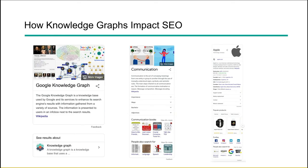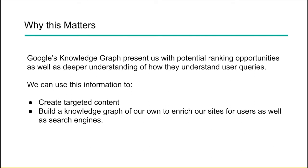We can actually use these knowledge graph examples and panels within search to understand quite a bit about what's going on within the query of the user and all the data that's been aggregated from behind the scenes that Google is now displaying for us — to really niche down and find the right content that we need to be producing for our end users. Google's knowledge graph presents us with a ton of ranking potential, not just in the knowledge panel but also in other places throughout the SERPs. It allows us to have a deeper understanding of how our users are interacting and how search engines understand our queries, so we can create targeted content that matches intent — and we can also use this to build a knowledge graph of our own to enrich our sites for both users and search engines.